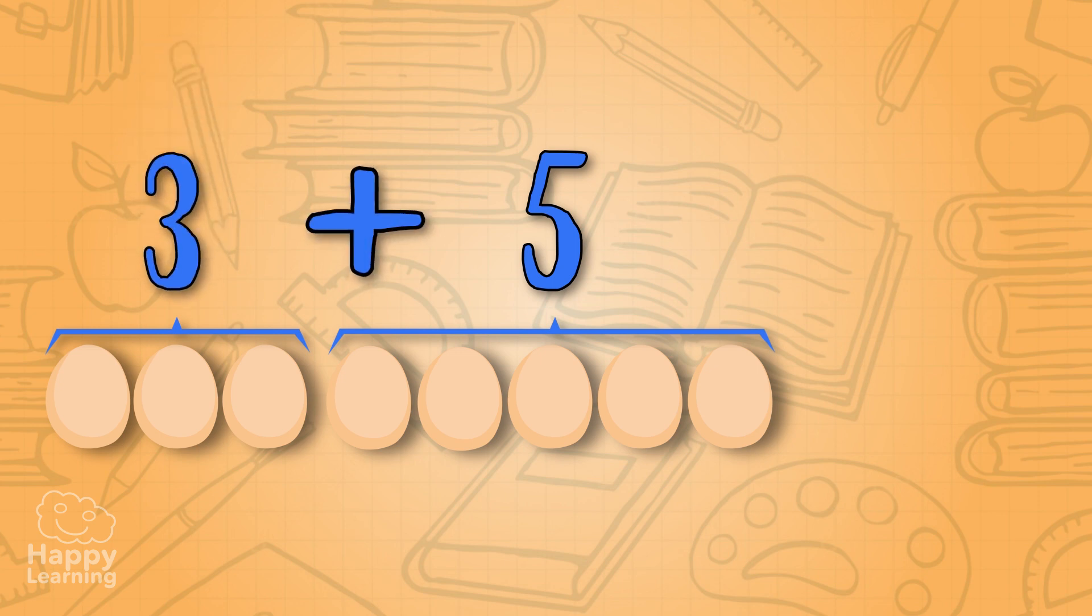Three eggs plus five eggs is... One, two, three, four, five, six, seven and eight eggs!